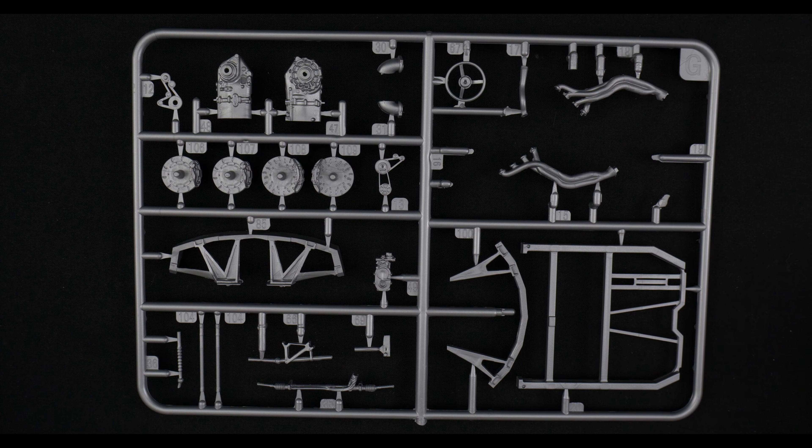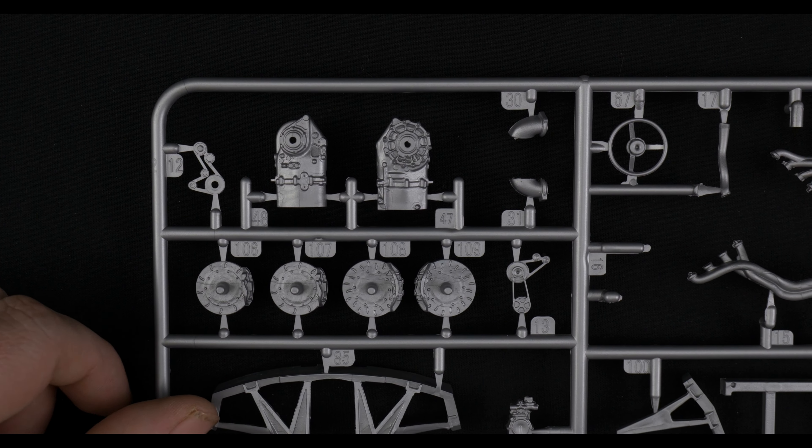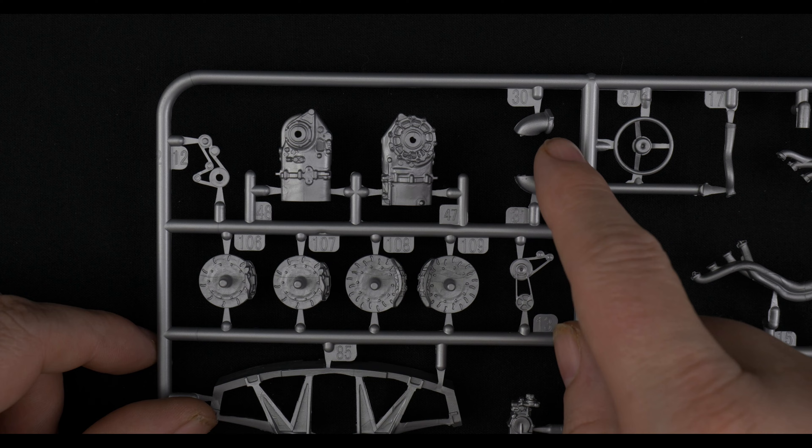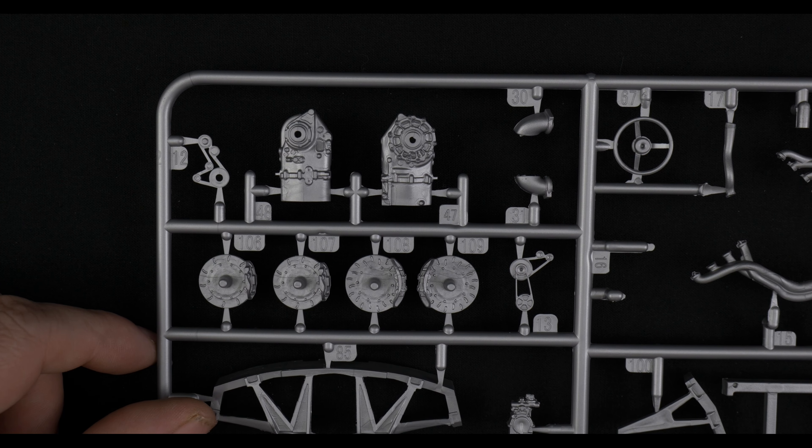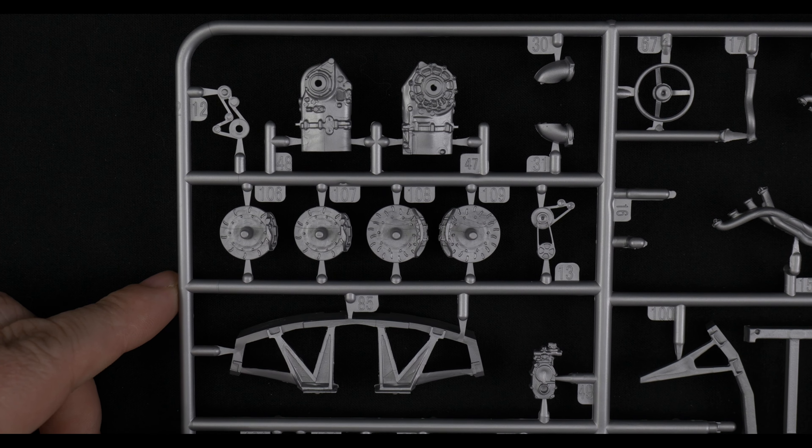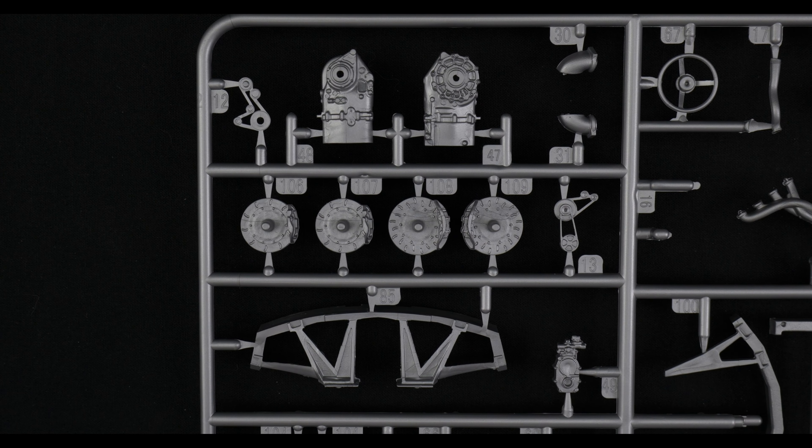And moving on to Parts Tree G, which is going to be more suspension pieces and roll cage pieces. Up in this corner we have the two-piece transaxle transmission, ends of the exhaust headers, pulleys, the brakes which have really nice detail, looks good. Another one of the pulleys, belts.